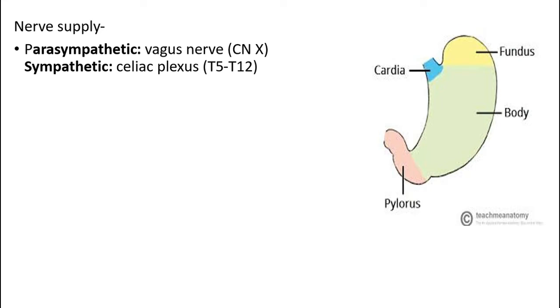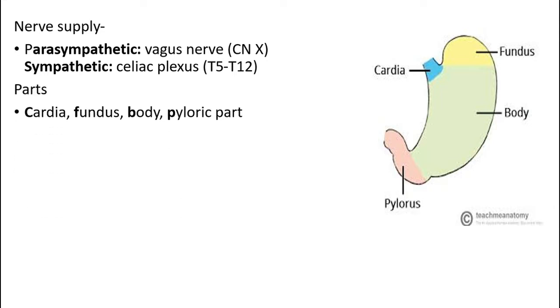The nerve supply: parasympathetic is the vagus nerve, cranial nerve 10, and sympathetic is from the celiac plexus, T5 to T12.